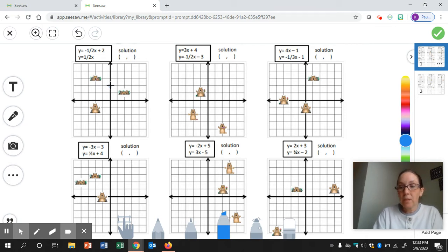From the y-intercept, I'm going to use the slope as a set of directions to get a second point, and sometimes even a third if you can. Since the slope is the number in front of the x, the slope is negative one-half. From the y-intercept, that means I'm going to go down one because it's negative one, and right two, and I'm going to put my point right there.